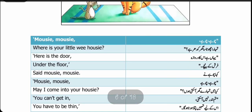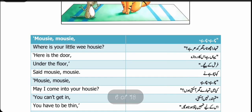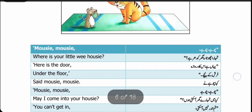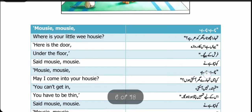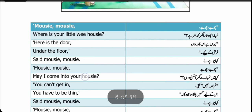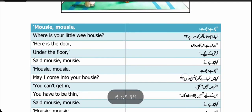Sad Mousy, Mousy — چوہے نے کہا۔ یہ ابھی جو میں نے lines پڑھی، line to line میں نے ان کے translation پڑھے students۔ ان میں بلی بہت چالاکی سے چوہے کو کہتی ہے کہ تمہارا چھوٹا سا گھر کہاں ہے اور تم کہاں رہتے ہو۔ چوہا بلی کو بتاتا ہے کہ فرش کے نیچے میرا گھر ہے۔ تو بلی آگے کیا کہتی ہے — Mousy, Mousy — May I come into your house? May I — کیا میں آ سکتی ہوں — into your house — تمہارے گھر کے اندر — کیا میں تمہارے گھر آ سکتی ہوں؟